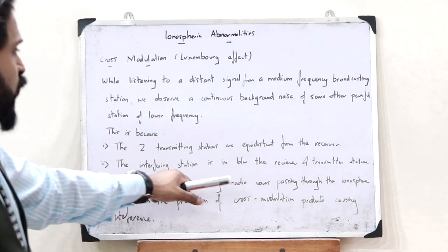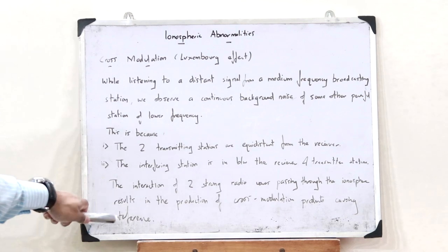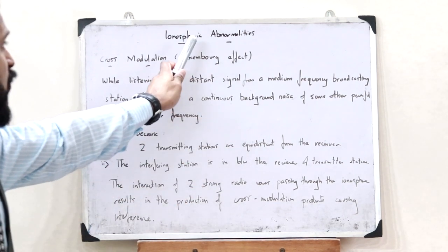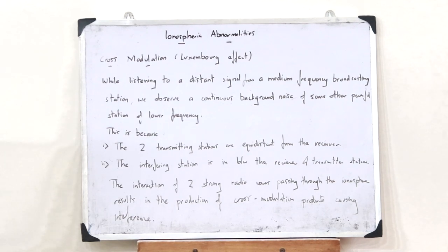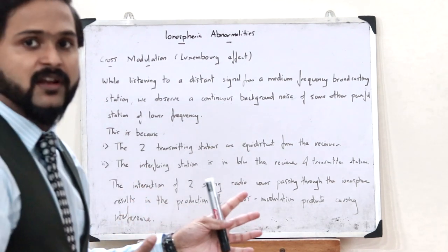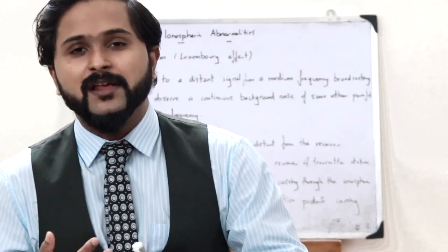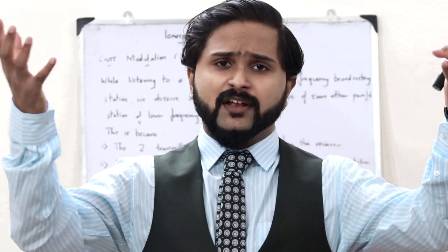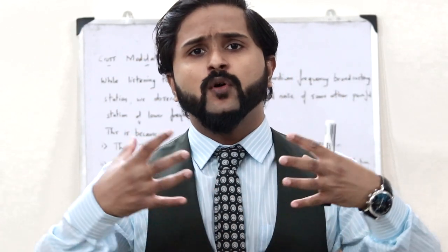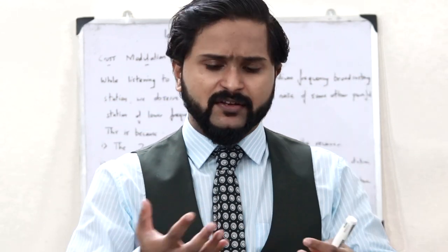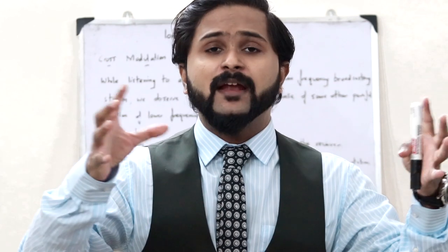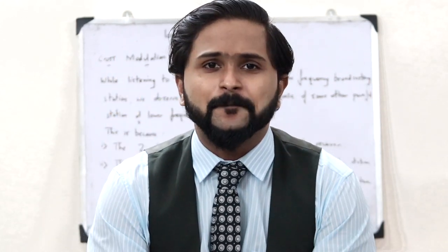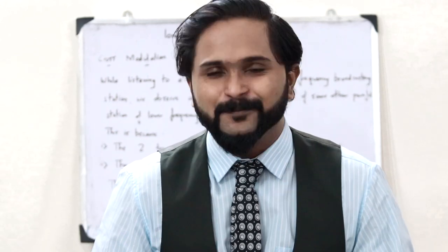The interaction of two strong radio waves passing through the ionosphere results in the production of cross-modulation products causing interference. This is what you refer to as cross-modulation abnormality in the ionosphere. The next type of abnormality is because of man-made noises — that is, the noises from the devices that we use. Because of these noises we make, there might be certain abnormalities caused in the ionosphere.